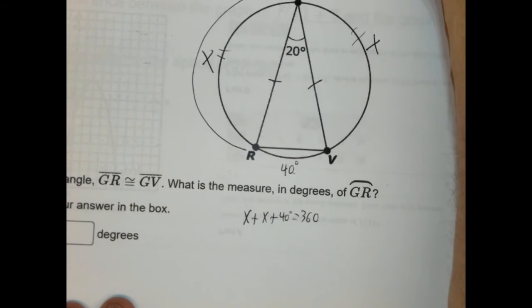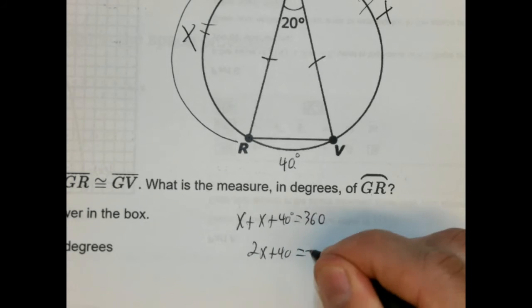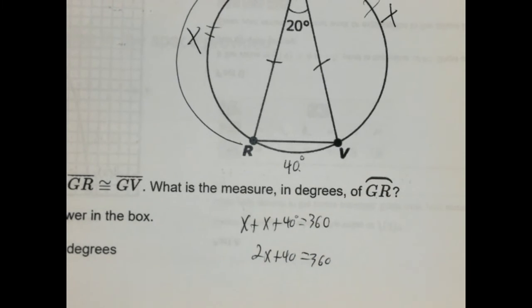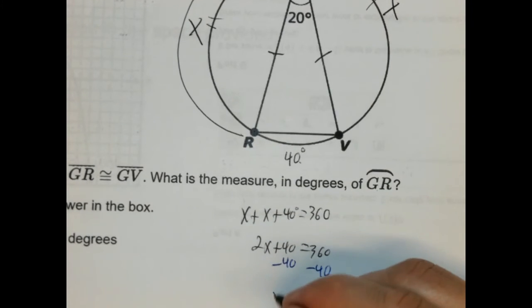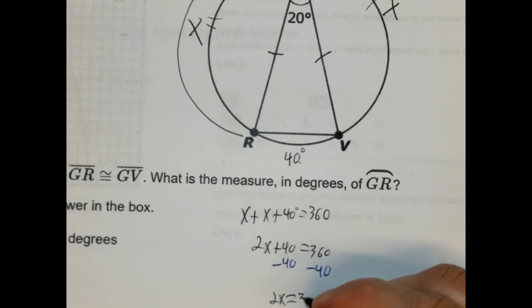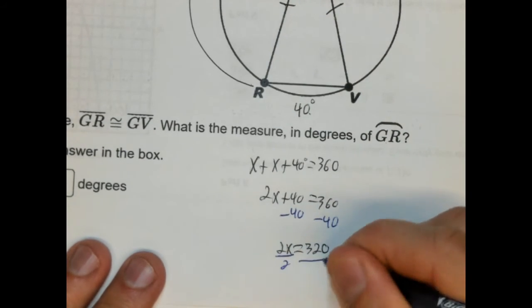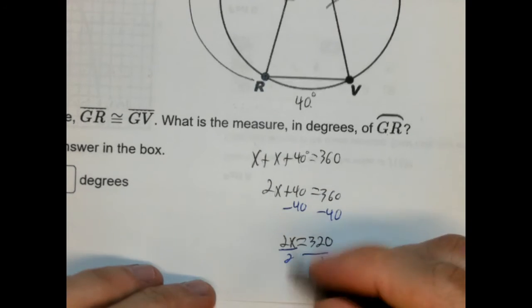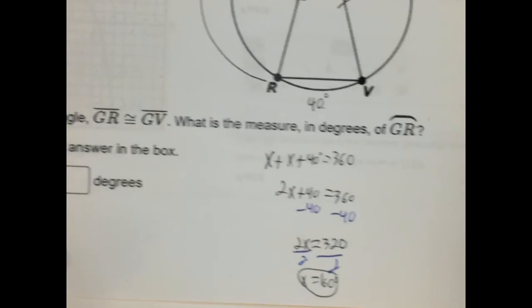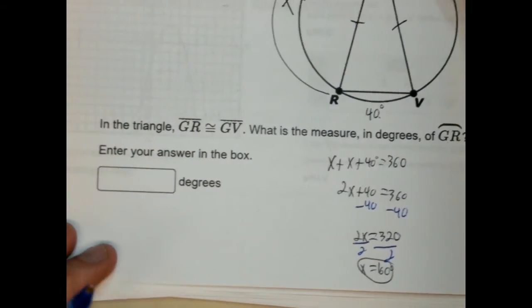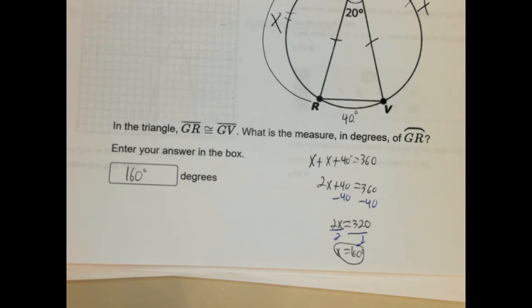So X plus X is 2X, plus 40 equals 360. Subtract 40 from both sides: 2X equals 320. Divide both sides by 2: X equals 160 degrees. And that's our answer — 160 degrees.